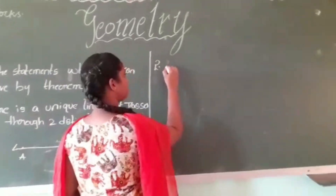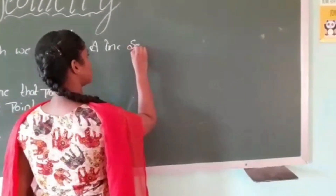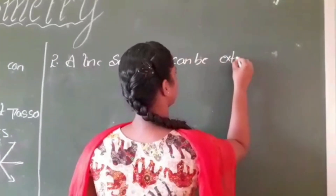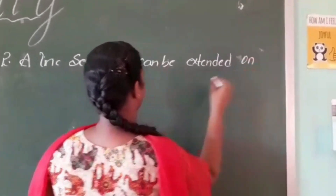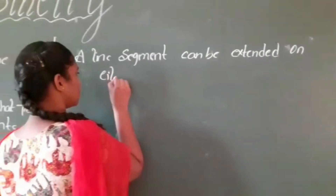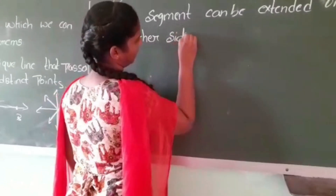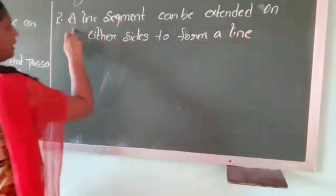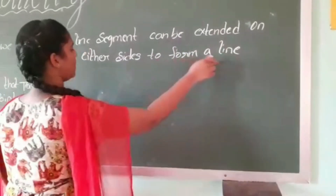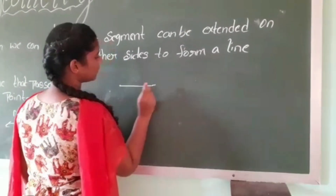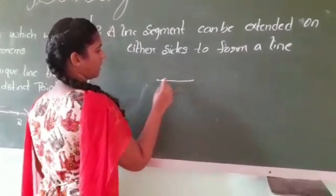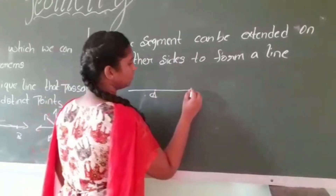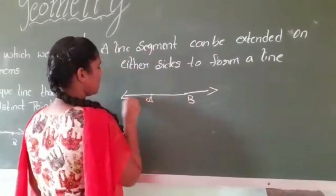A line segment can be extended on either side to form a line. The shortest distance between two points is called a line segment. This is line segment AB. When we extend a line on either side of a line segment, it forms a line.